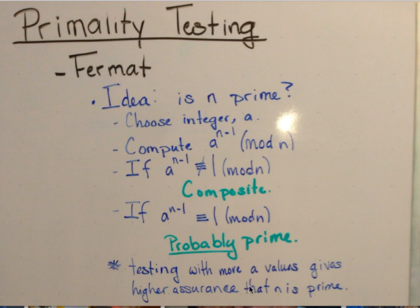We can test more values for a, like if we choose a to be 2 and we test it, and then we choose a to be 3 and we test it. The more values for a we choose, it gives us higher and higher assurance that n is indeed prime.